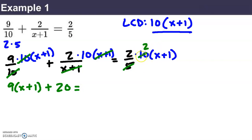What we're left with in each term, working from left to right here, we've got 9 times x plus 1 plus, here you've got the 2 times the 10, that's 20. And that equals, the 10 became a 2 and we divided by 5, we've got 2 times 2 times x plus 1. That's 4 times x plus 1.